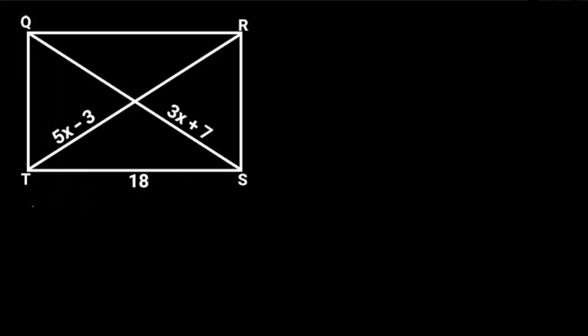This figure is a rectangle. If QS is equal to 3x plus 7, TR is equal to 5x minus 3, and TS is 18 units, find the area of the rectangle.